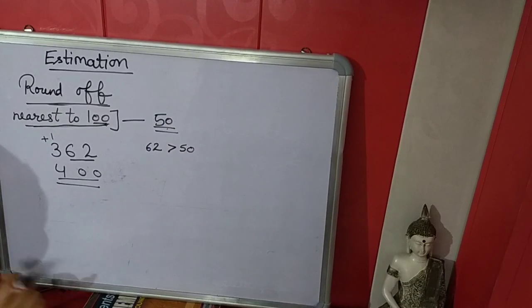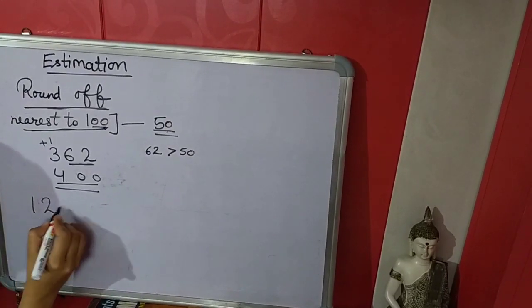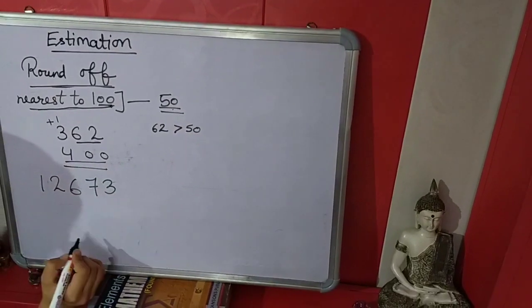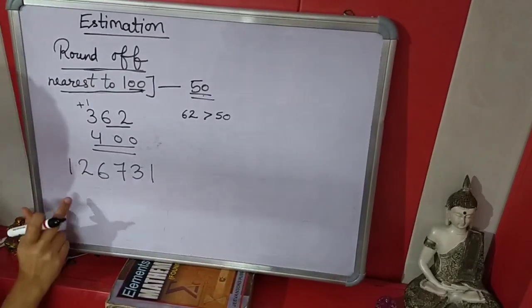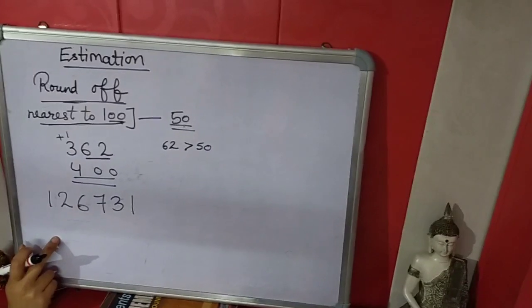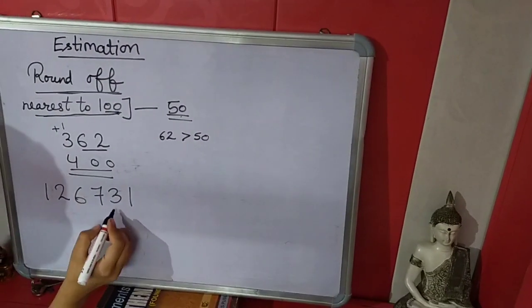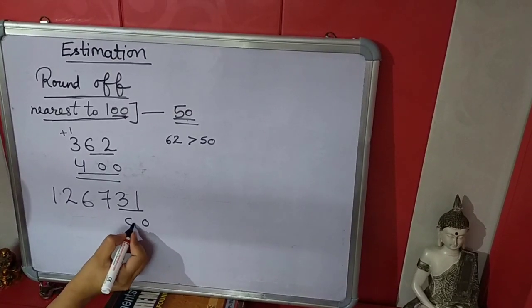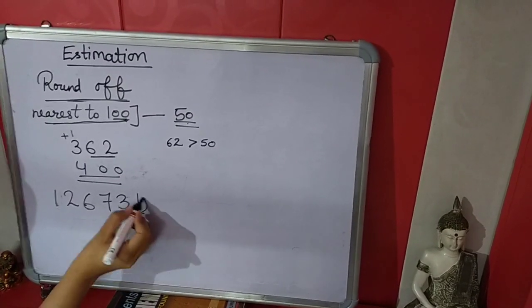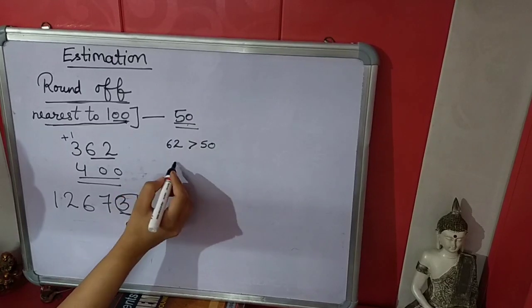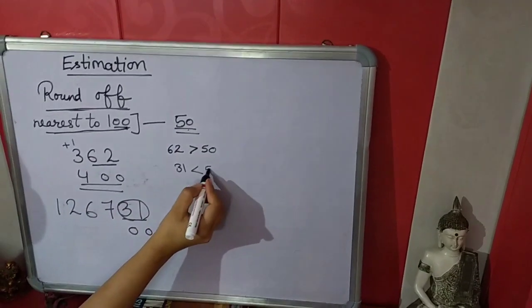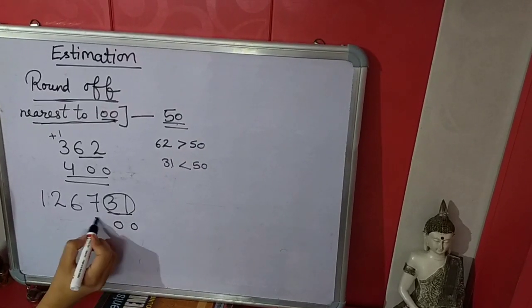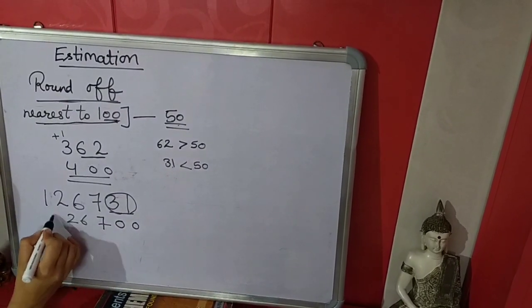Take another example. We have to estimate nearest to 100. Again in 100 there are 2 zeros, so the last 2 numbers we convert into zeros. Now we compare this number to 50 and it is less than 50. So we will not add any number in 7 — it will come the same.